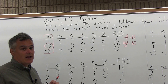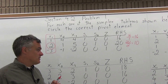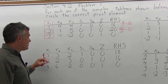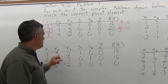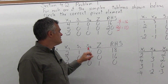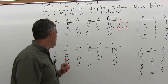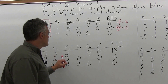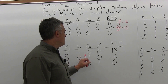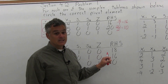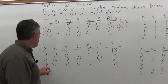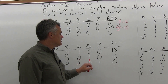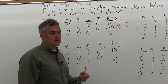The second tableau also has 3 rows. The top row is 3, 3, 2, 1, 0, 0, 18. The second row is 2, 2, 3, 0, 1, 0, 16. And the bottom row is negative 4, negative 6, negative 2, 0, 0, 1, 0.